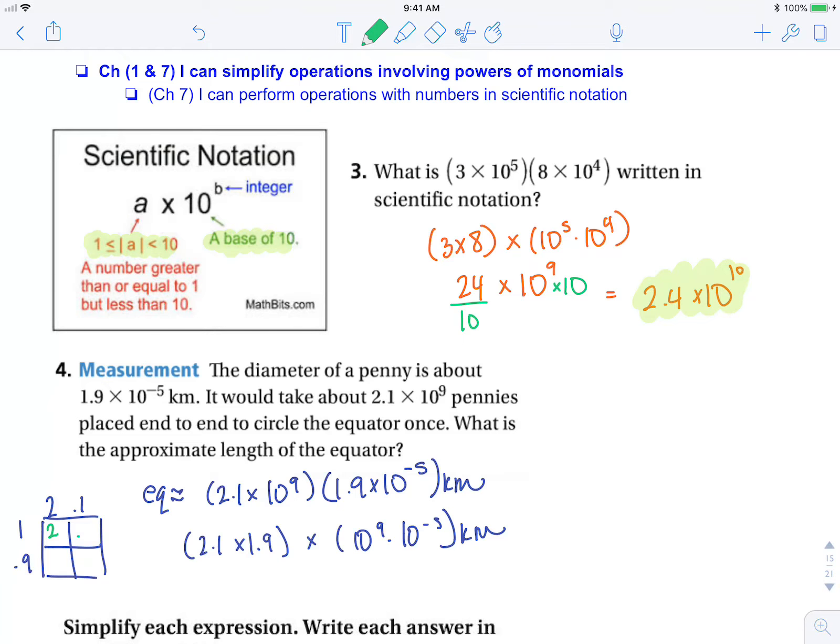So that's 2.1, 1.8, 0.9. And now I can add those, and that becomes 3.99 times 10 to the positive 4 kilometers.